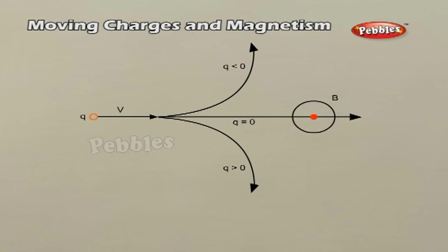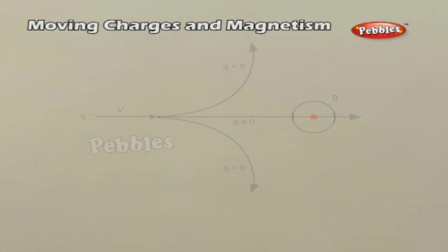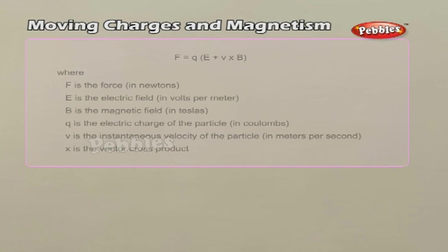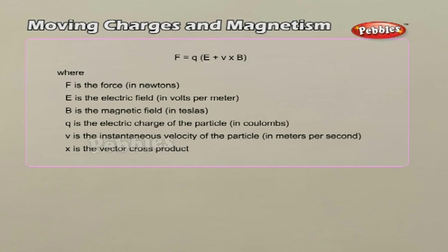The trajectory of a particle with charge Q under the influence of magnetic field B directed perpendicular out of the screen is shown for different values of Q.